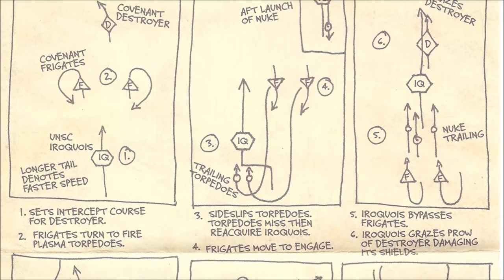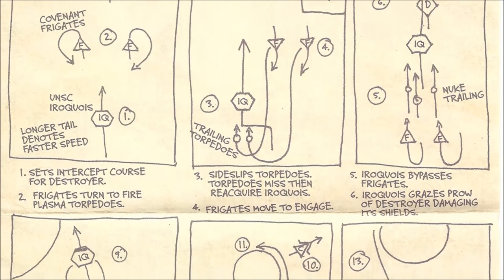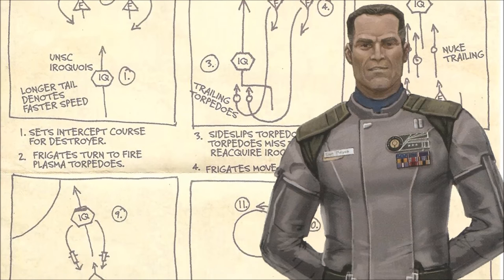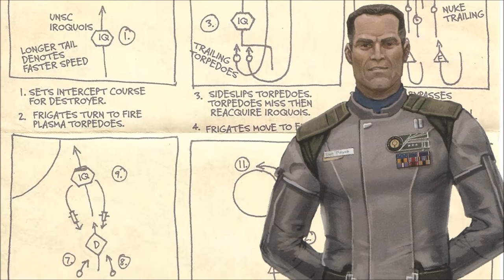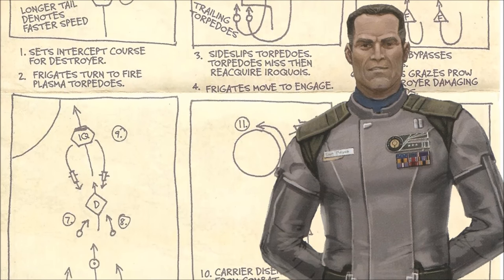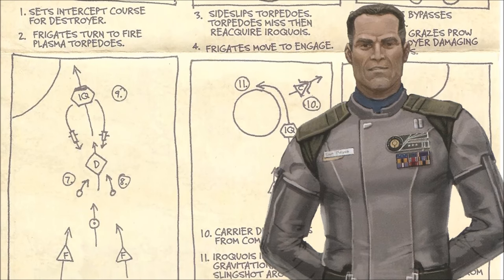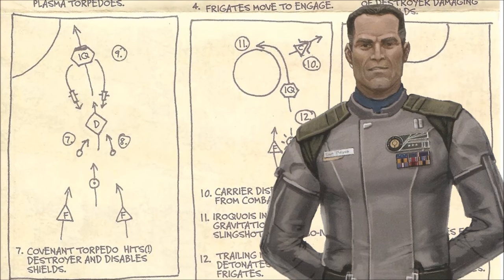The Keyes Loop is one of the most well-known military maneuvers in the Halo fiction. Executed by then Commander Jacob Keyes, the move was an act of strategic brilliance, desperation, and ultimately resulted in one of the few human victories since the death of Admiral Cole.